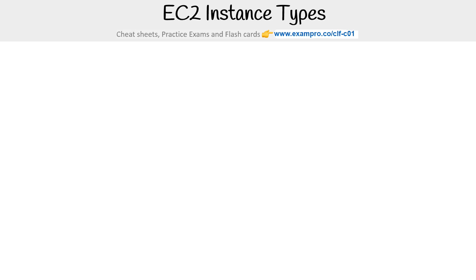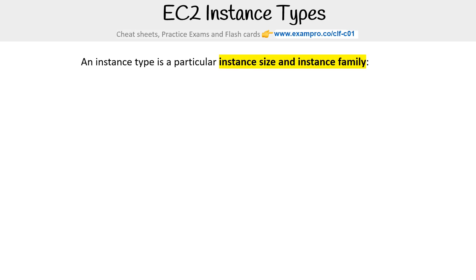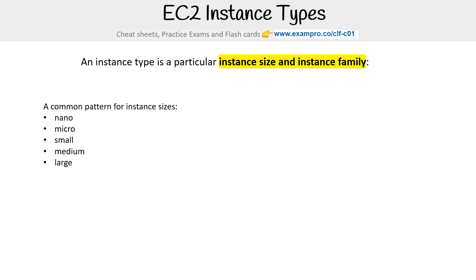Let's take a look at what EC2 instance types are. An instance type is a particular instance size and instance family. A common pattern for instance sizes you'll see is things like nano, micro, small, medium, large, x large, 2x large, 4x large, 8x large.